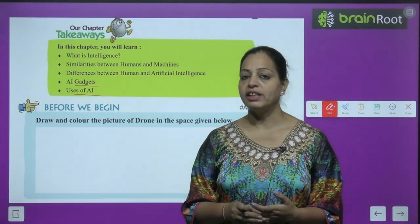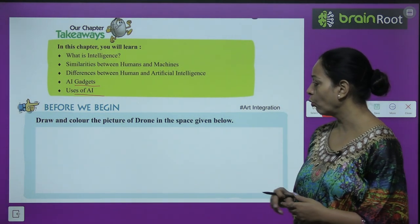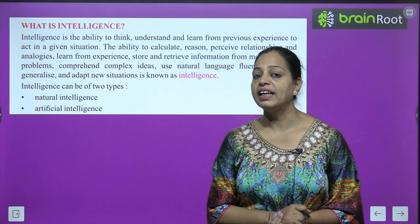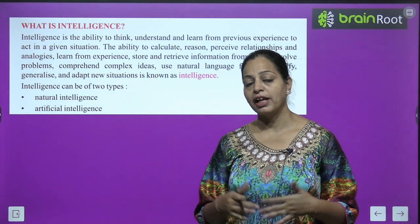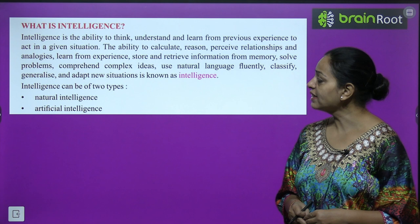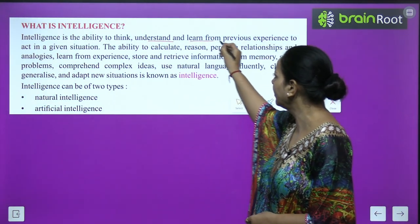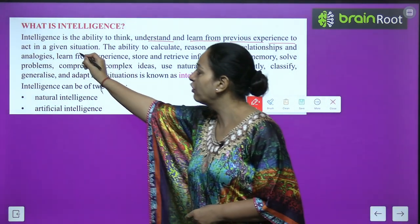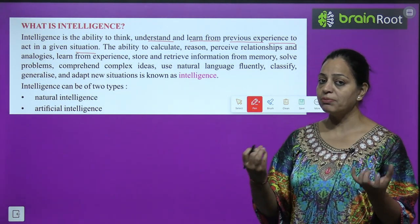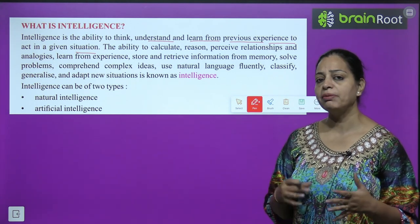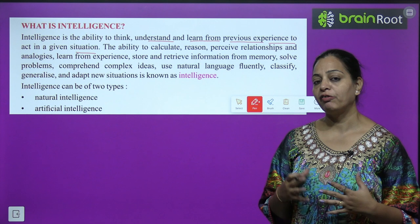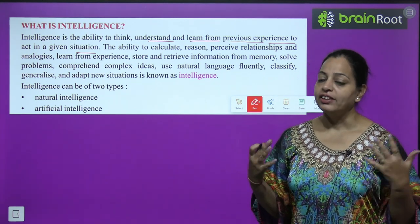Before we begin, you can draw and color the picture of a drone in the space given below. Now, what is intelligence? Sometimes we say that a child or a girl is very intelligent. Intelligence is the ability to think, understand, and learn from previous experience to act in a given situation. This is very helpful in our daily life.